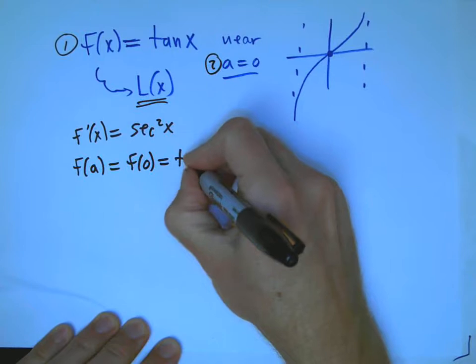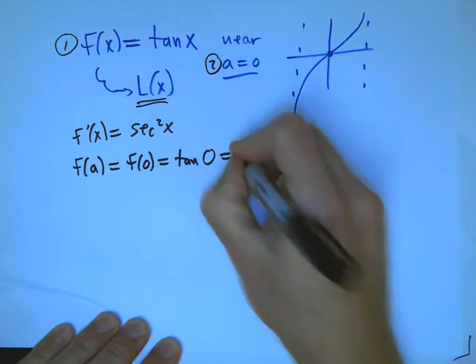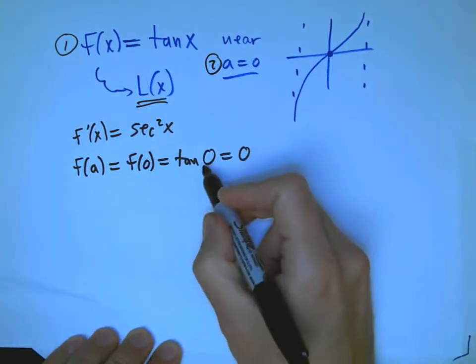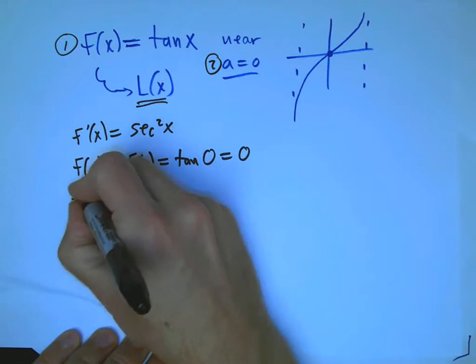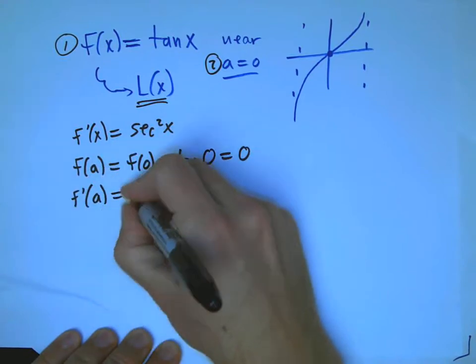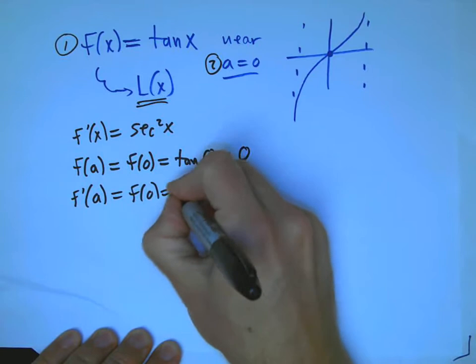And secant squared of 0, that's 1 over cosine squared. And so, that's 1. And so, we get a very simple approximation.